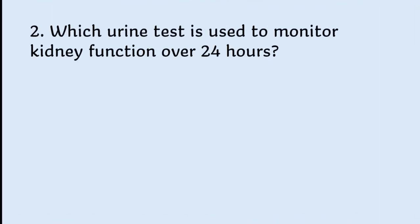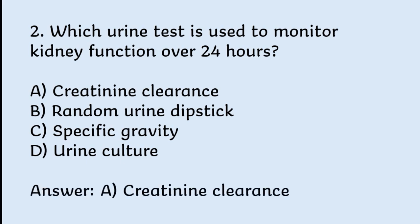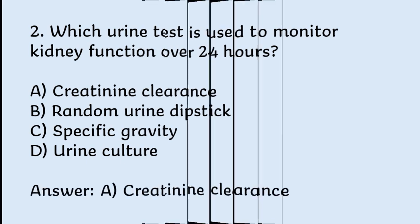Which urine test is used to monitor kidney function over 24 hours? Options: creatinine clearance, random urine, dipstick, specific gravity, urine culture. Correct answer is creatinine clearance.